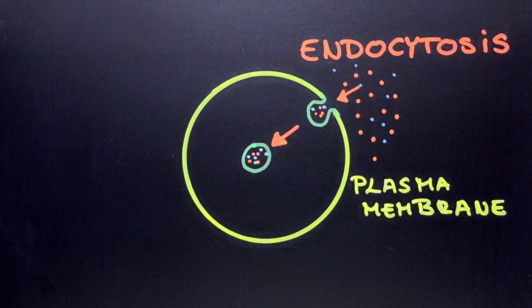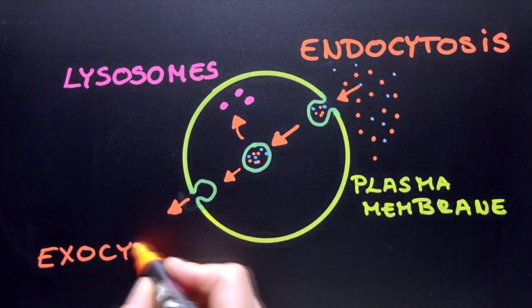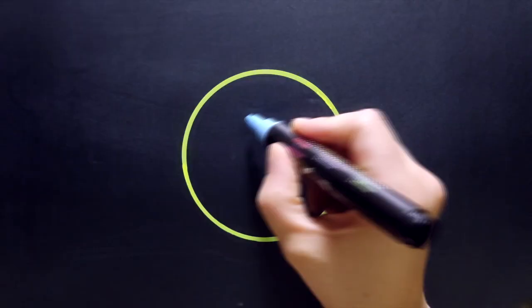Some of the components of the endosomal content are directed towards the lysosomes for degradation, while others will be recycled to replenish the plasma membrane by a process called exocytosis, the opposite of endocytosis.